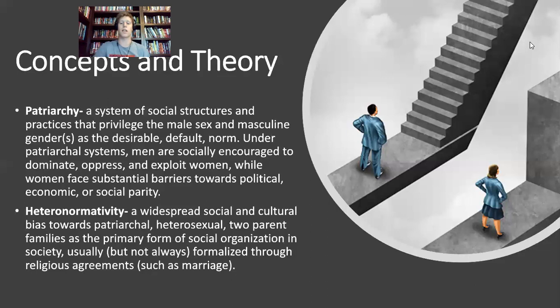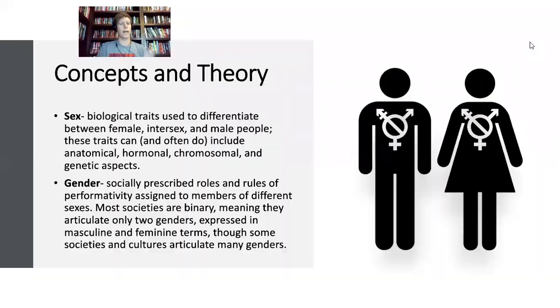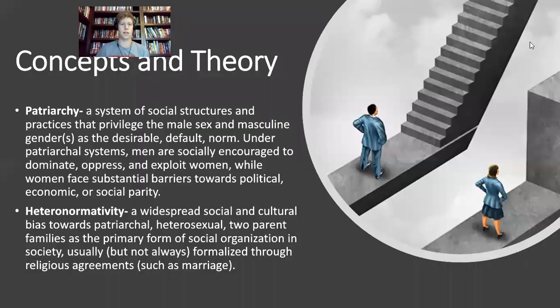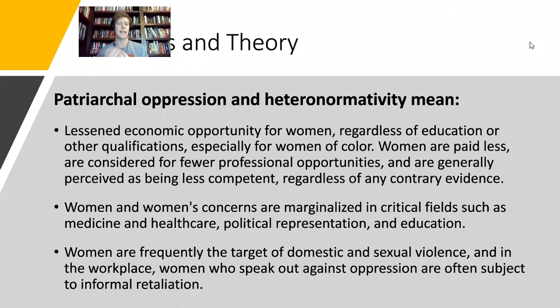So these are core concepts to keep in mind: sex is biological and dependent on multiple traits — not only anatomical but also internal factors; gender is a social construct; patriarchy is a system of interlocking structures and practices that reinforce male supremacy; and heteronormativity similarly emphasizes the heterosexual family unit as the be-all end-all form of social organization. These contextualize the experiences of women workers but also of men and LGBTQ individuals in US history.